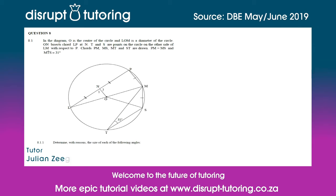Hey peeps, Julian here from Disrupt Tutoring, and as always it's such a pleasure to join you. We are now doing question 8 from the DBE Maths Paper 2 2019, and this is a Euclidean geometry question.